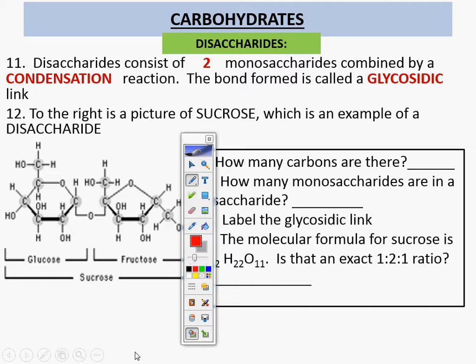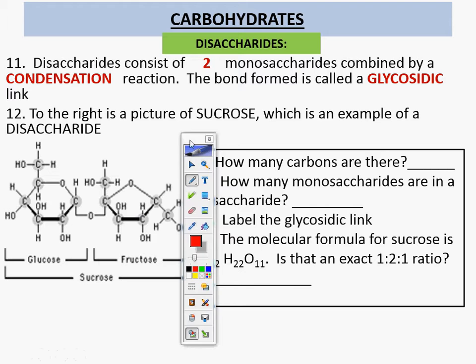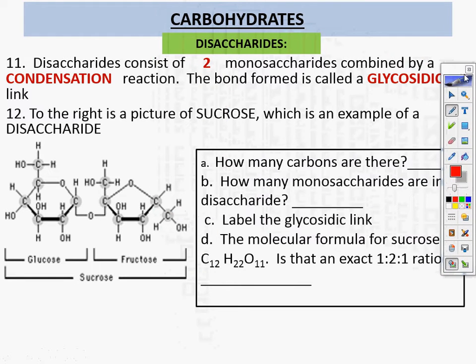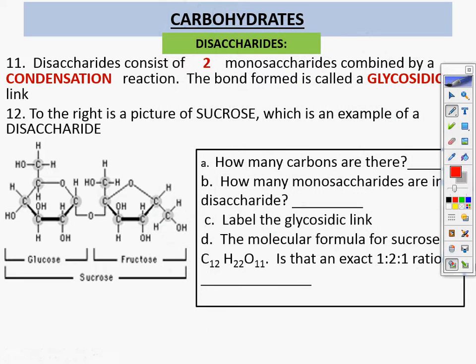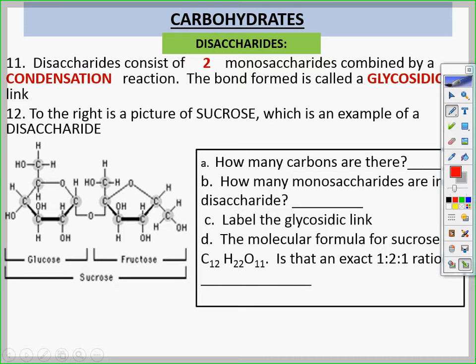Sucrose is an example of a disaccharide. Let's figure out how many carbons we have here. Make sure you highlight and underline this glycosidic link. Condensation reaction.